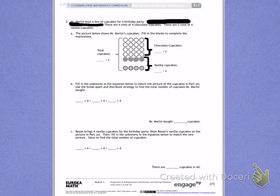First of all, your paper looks much neater than mine, but please let's pay attention to what the problem is asking us to do. Number 3. Mr. Martin buys a box of cupcakes for a birthday party. There are four rows of four chocolate cupcakes. There are two rows of four vanilla cupcakes. The picture below shows Mr. Martin's cupcakes. Fill in the blanks to complete the expressions.